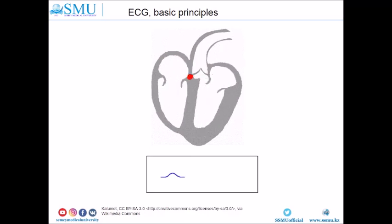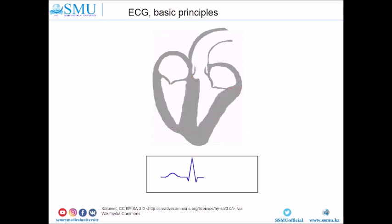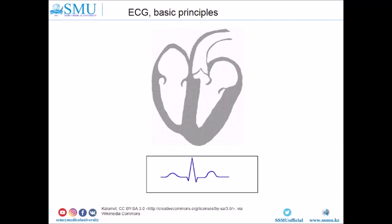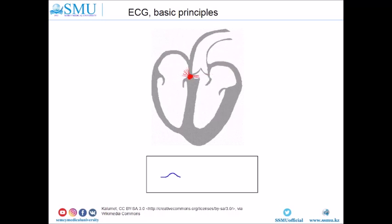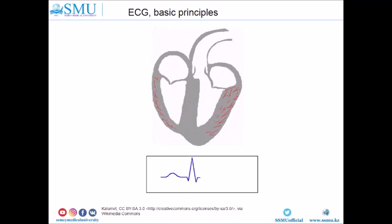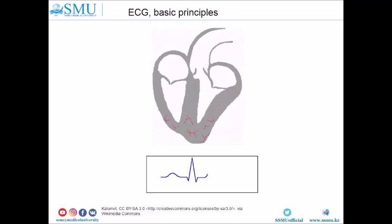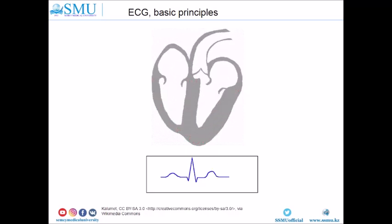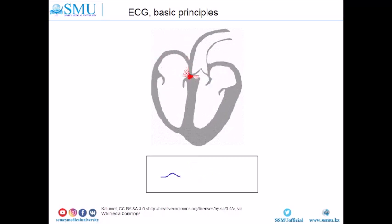ECG represents electric activity of the heart, and every single event in the electric cardiac cycle has its own effect on the ECG. The electric impulse is generated in the sinus node and then spreads around the atrium. It goes to the AV (atrioventricular) node, where there will be some delay, and after this it will go to the His-Purkinje system.